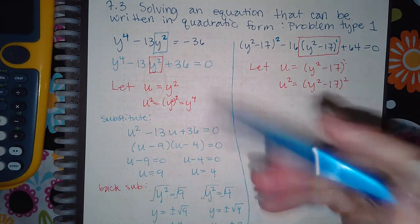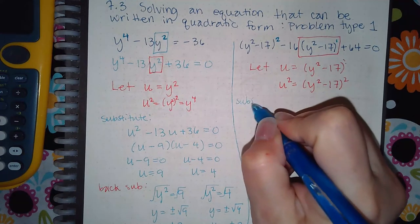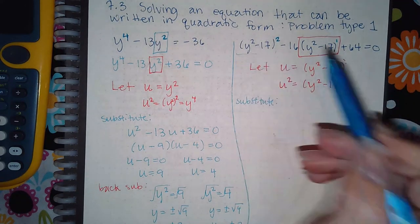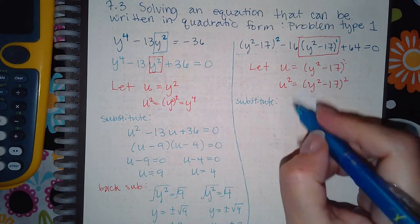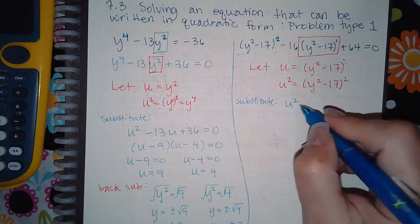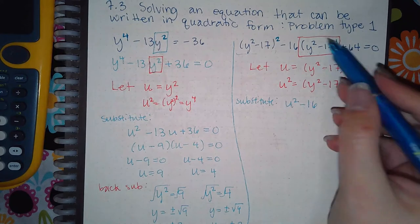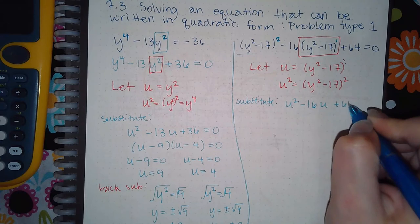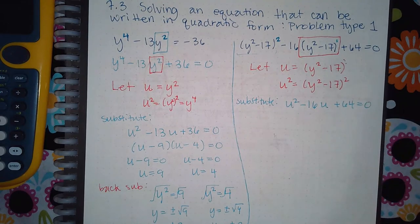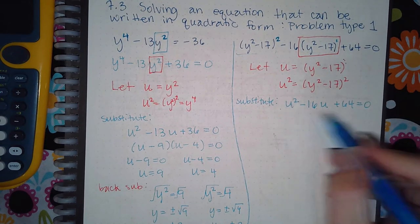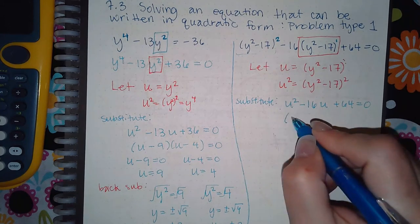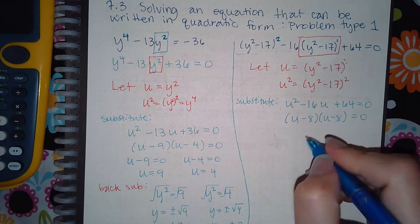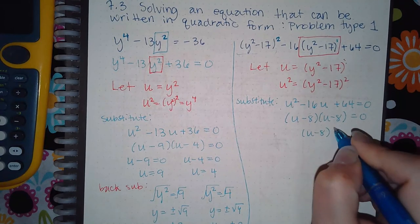And so then you substitute. I'm going to take this whole thing. And instead of writing that whole thing, I'm going to write u squared minus 16. And instead of writing this whole expression, I'm going to write just u plus 64 equal to 0. So there's no number in front, so I am going to factor this. I get u minus 8 and u minus 8.